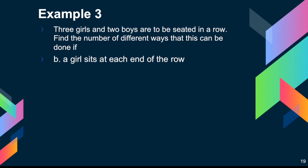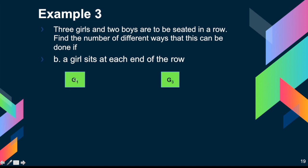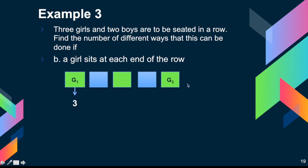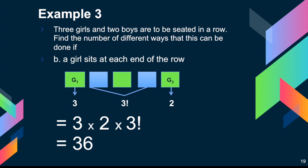Part B: a girl sits at each end of the row. The restriction is that both ends must be occupied by girls. For the first end, we have 3 choices of girl. For the other end, we have 2 choices remaining. The remaining 1 girl and 2 boys — 3 people — fill the middle positions in 3 factorial ways. Multiplying these together: 3 × 2 × 3! = 6 × 6 = 36 possible arrangements.